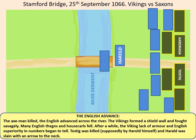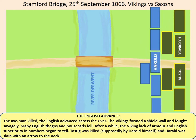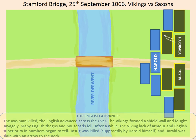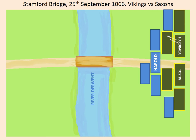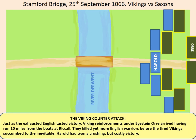The axe man killed, the English advanced across the river. The Vikings formed a shield wall and fought savagely. Many English thanes and housecarls fell. After a while, the Vikings' lack of armour and English superiority in numbers began to tell. Tostig had been killed — supposedly by Harold himself. Also, Hardrada had been struck in the neck by an arrow and also killed. At this point, it appeared that the English were on the verge of victory, and the remaining Viking resistance was beginning to crumble.